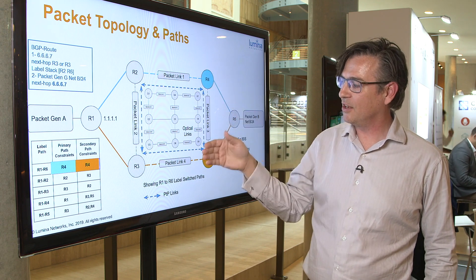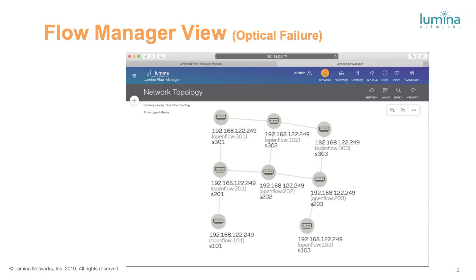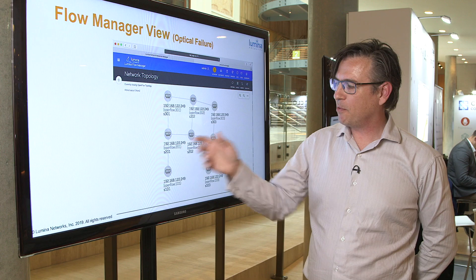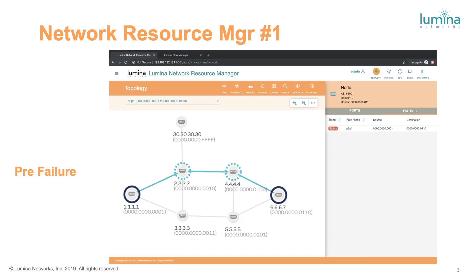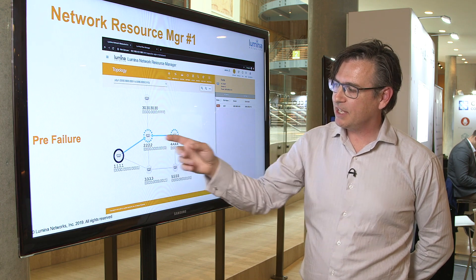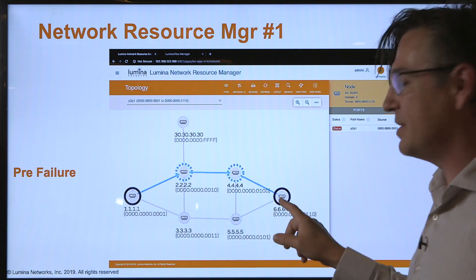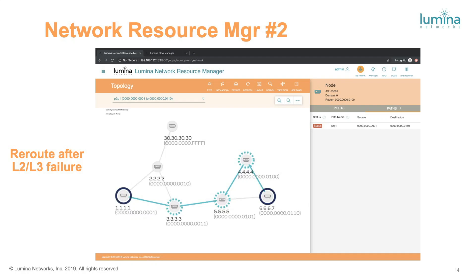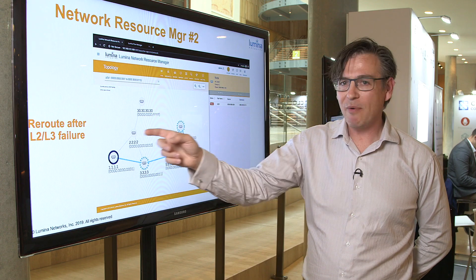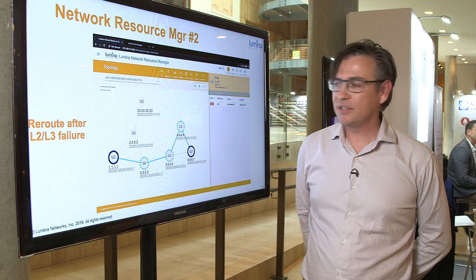This is the GUI for LUMINA Flow Manager, showing the nine optical switches in the network. This is what we'll see when we break or remove a switch — the topology gets updated. This is the PCE GUI, the LUMINA Network Resource Manager. We see the six routers connected; the optical domains are hidden but we see the paths connected between router 1 and router 6, taking the northbound path. We have path constraints picking router 4. When we break the link between router 4 and router 2, the path will be rerouted via router 4 as the path constraint.